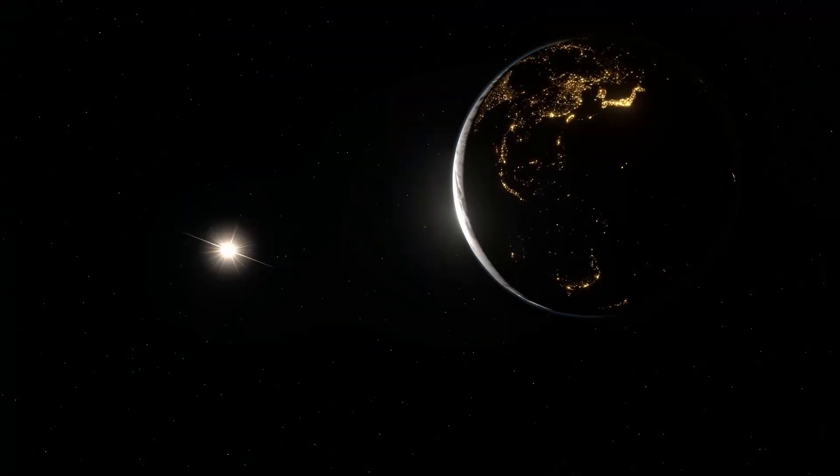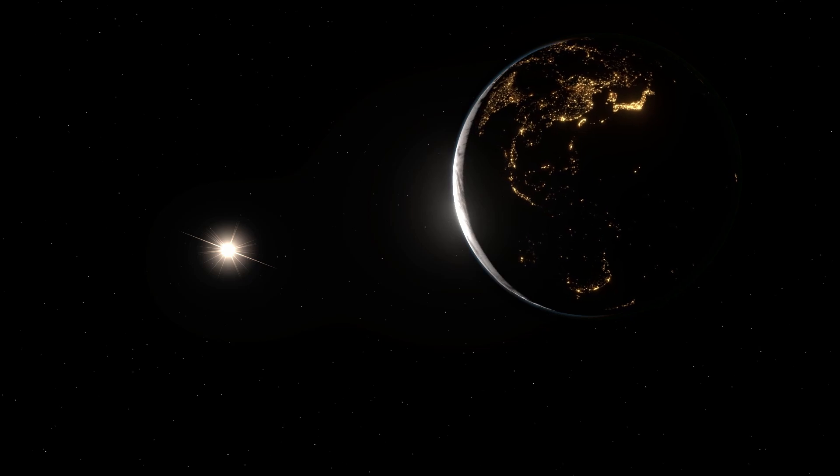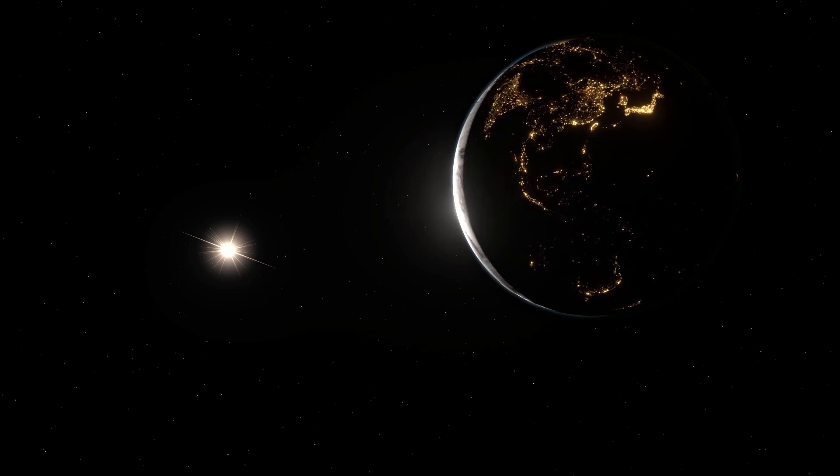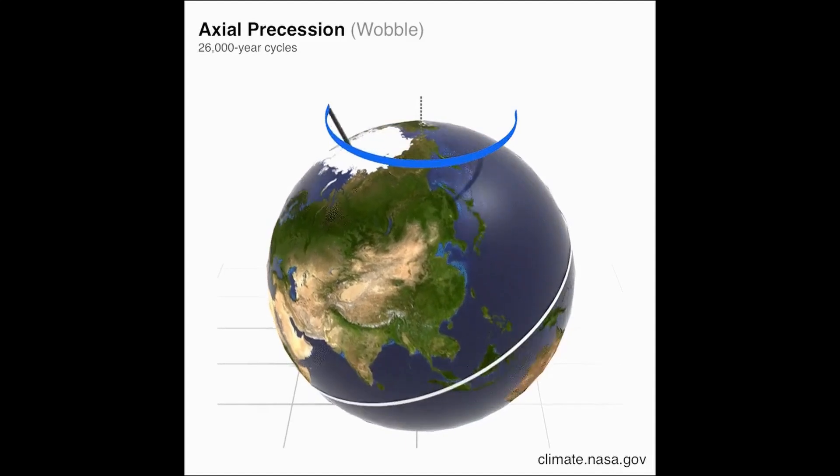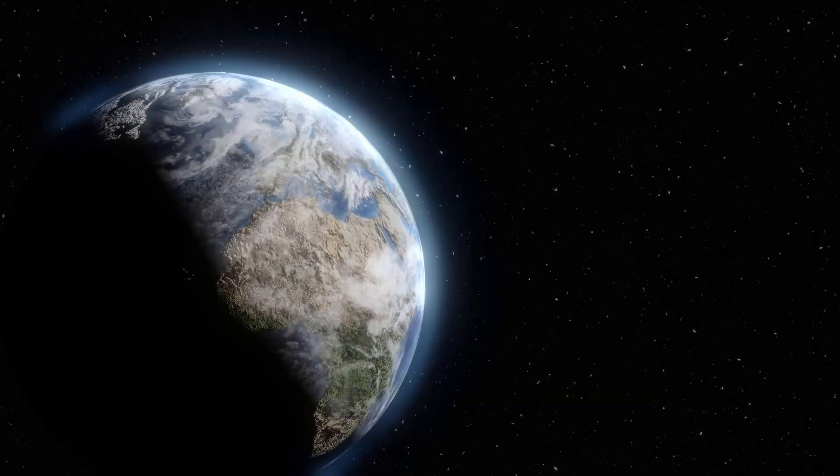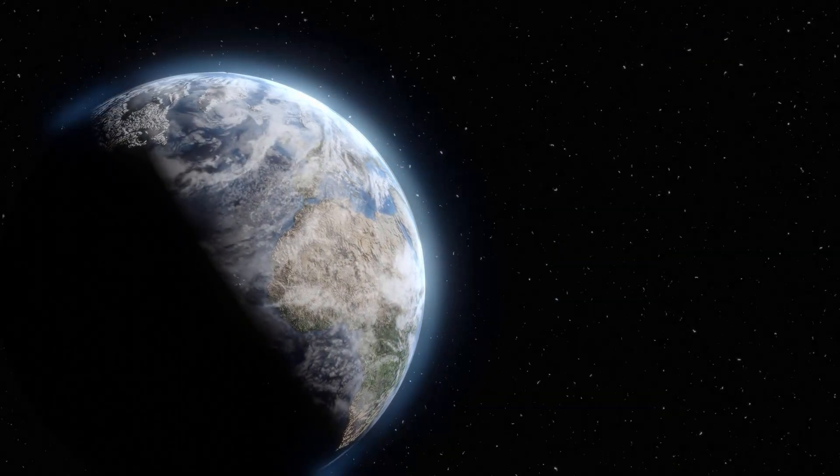This precession is caused by the gravitational pull of the Moon and the Sun on the Earth's equatorial bulge. The Earth's tilted rotation at an angle of 23.5 degrees causes the change of the seasons, and the rotation of the Earth in general has a profound effect on our weather.